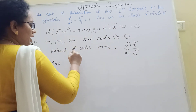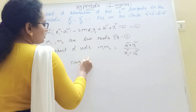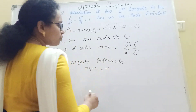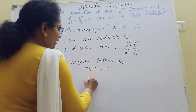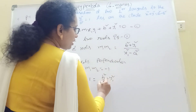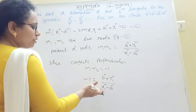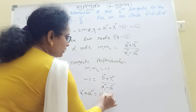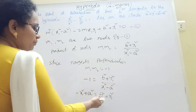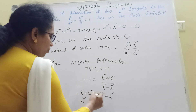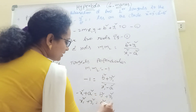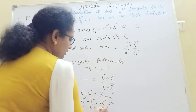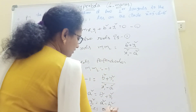The tangents are perpendicular. The condition for perpendicular tangents is m₁ · m₂ equal to minus 1. Therefore, minus 1 equal to (b² plus y₁²) divided by (x₁² minus a²). Cross-multiplying: minus x₁² plus a² equal to b² plus y₁². Rearranging: x₁² plus y₁² equal to a² minus b².